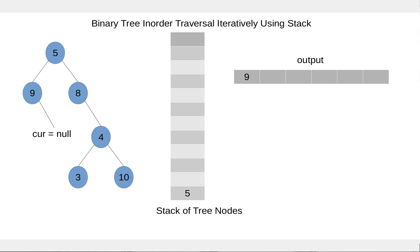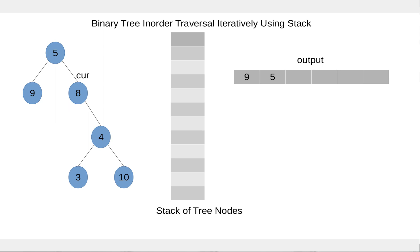Again current is null so we'll pop the node from the stack, process this node, and move to the right child. So 8 is not null, so we'll add 8 to the stack and move to the left child of 8. Now current is null so we'll pop the node from the stack, process 8, and move to the right child.